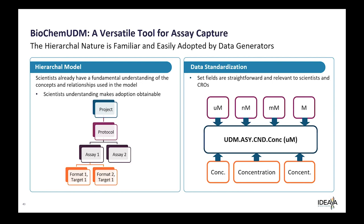Most scientists tend to have a fundamental understanding of hierarchy, and that is exactly what this model utilizes to leverage pivot aggregation. It also takes care of data standardization. I don't know how many of you have seen the many typos and different versions you could have of just the word 'concentration,' and then of course you have the unit choice. The BioChem UDM lets you choose any word or unit you want, but it makes it integrated within the data so your units don't get lost.